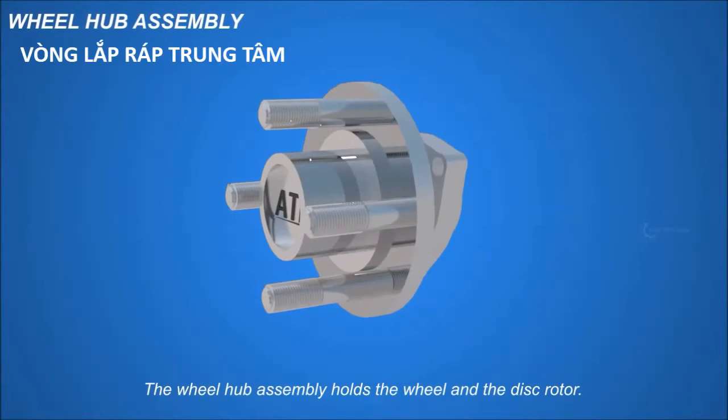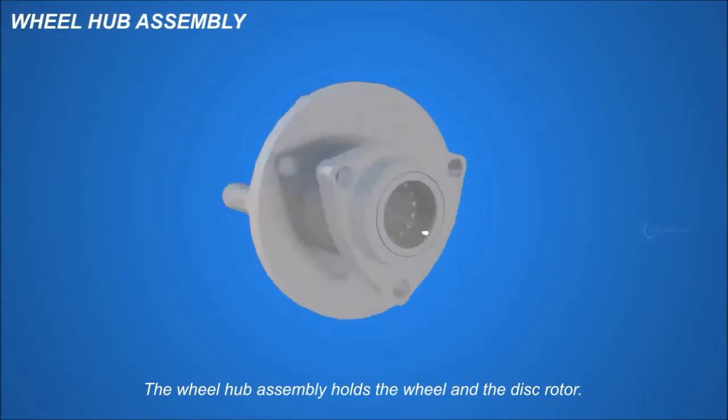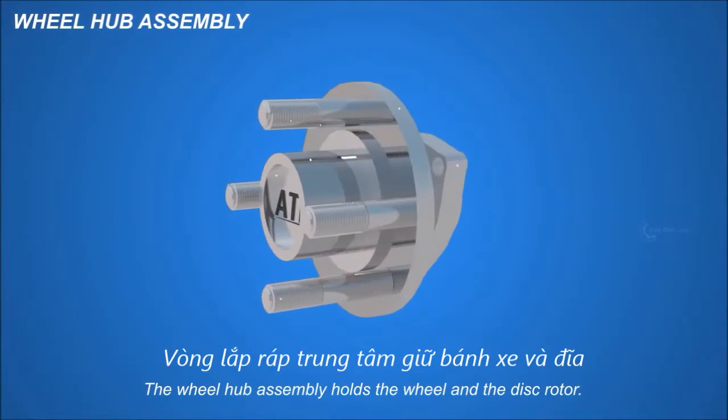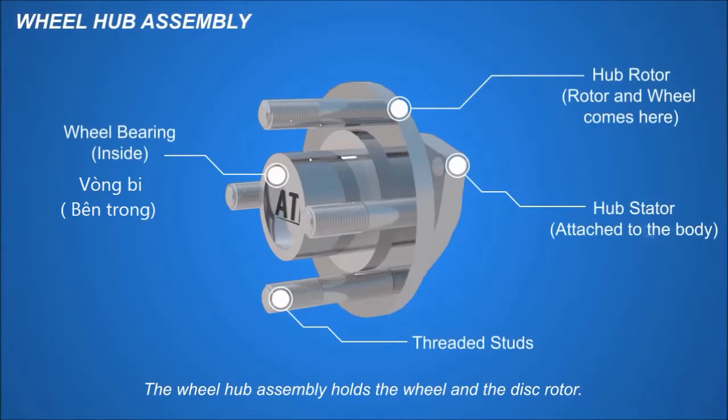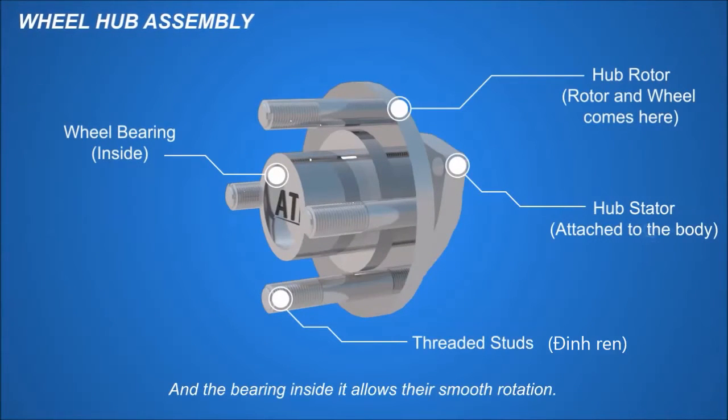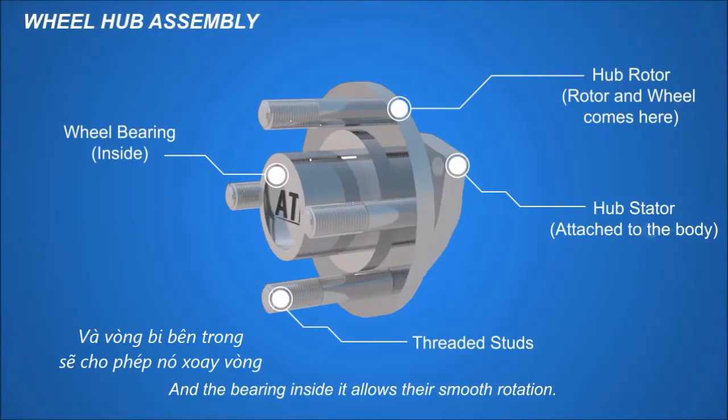The wheel hub assembly holds the wheel and the disc rotor, and the bearing inside it allows their smooth rotation.